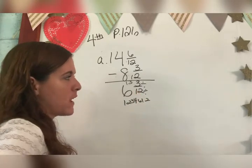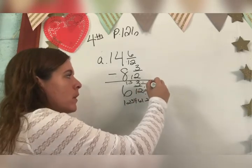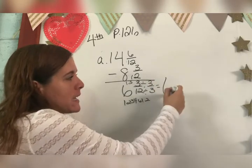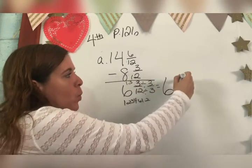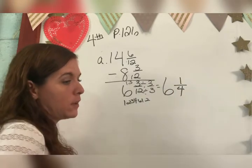Okay. What's my greatest common factor, Jayla? Three. So here we go. Here's our answer. Six. Don't forget your whole number. And one over four.